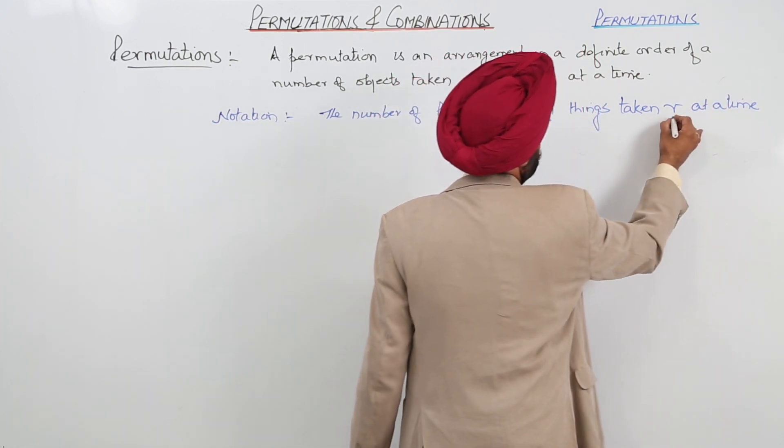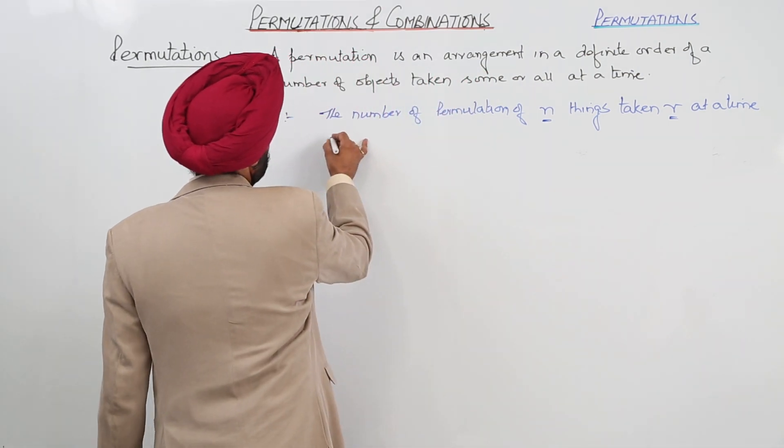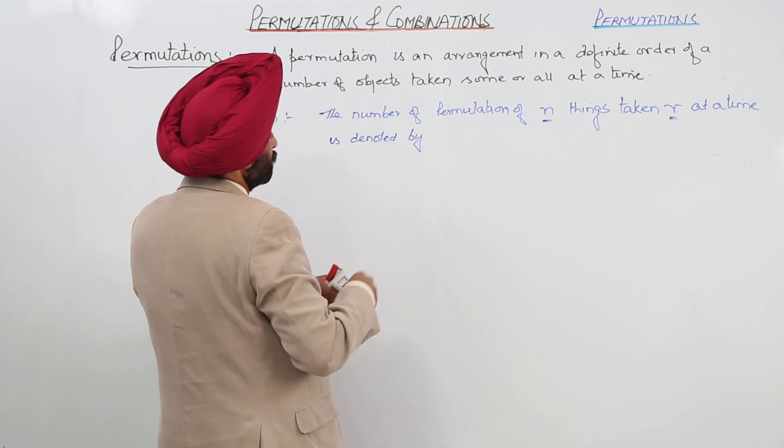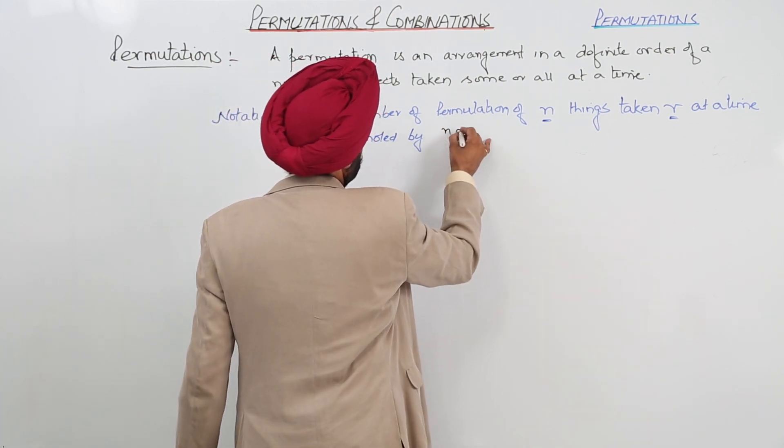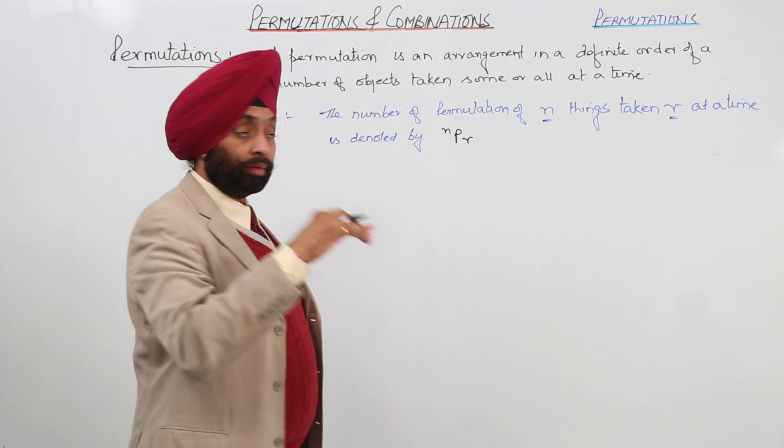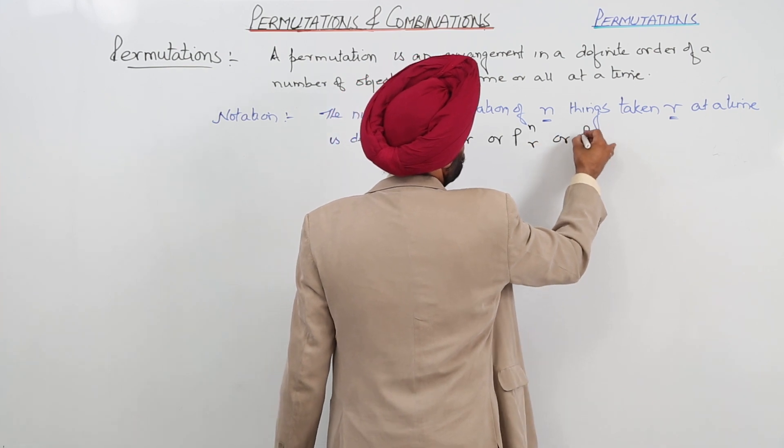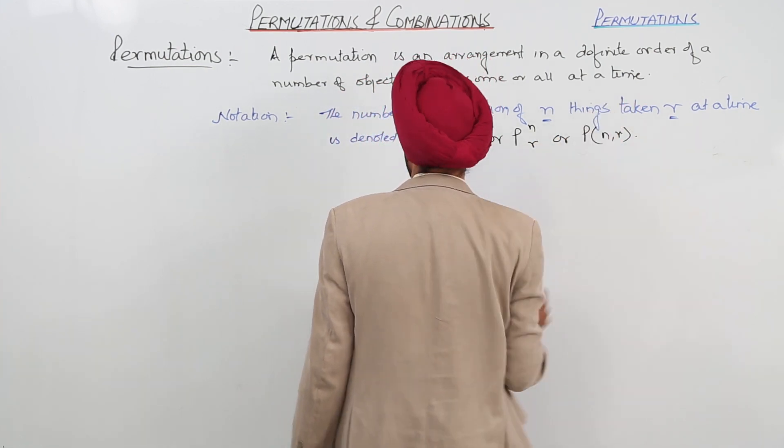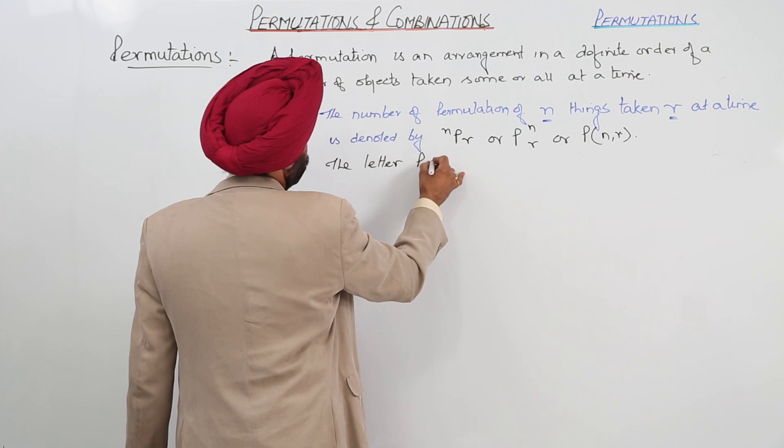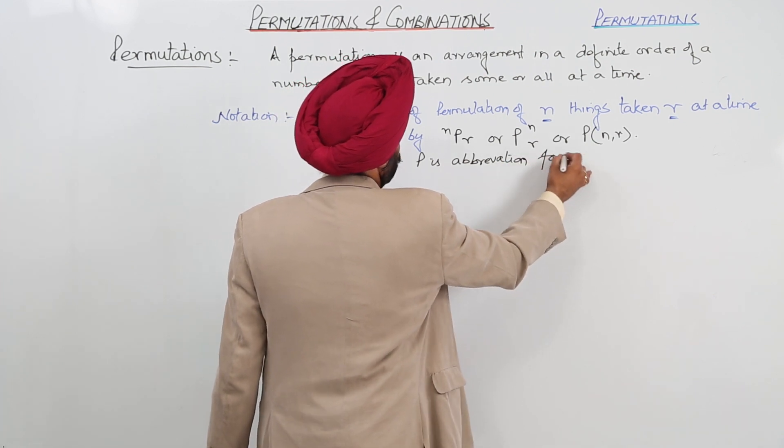So we are having here n things and here we are having r things. n things taken r at a time is denoted by, we are writing nPr. n on the top or you can say n on the head of the P then r on the base or like this also. The letter P is abbreviation for permutation.